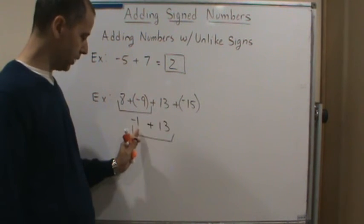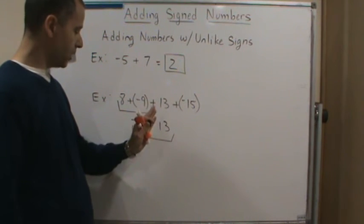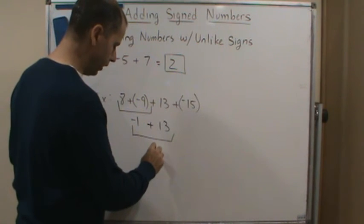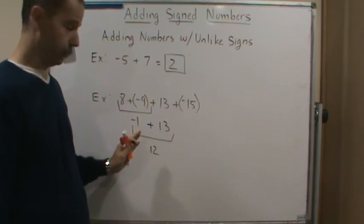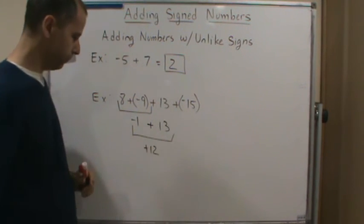Always subtract the smaller number from the larger number in absolute value. So this is 13 minus 1, which is 12. And then which one is bigger in absolute value, the 13. So I'm going to give it the positive value.